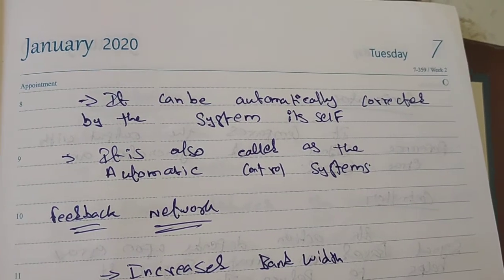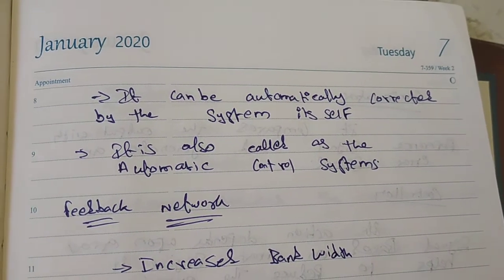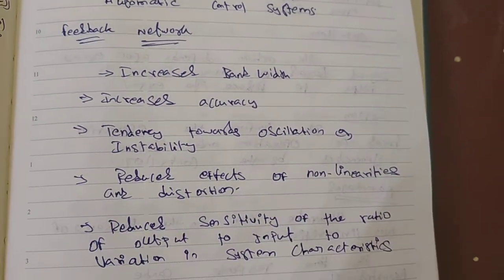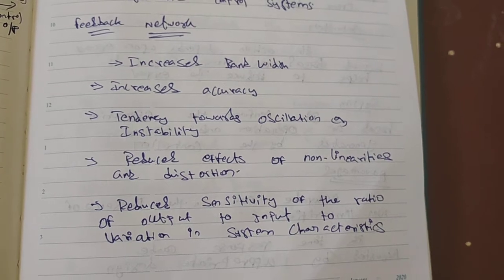Automatically corrects. If the system has a fault, you can correct it automatically. You can connect with different types. There is a feedback network system. There is bandwidth and accuracy.